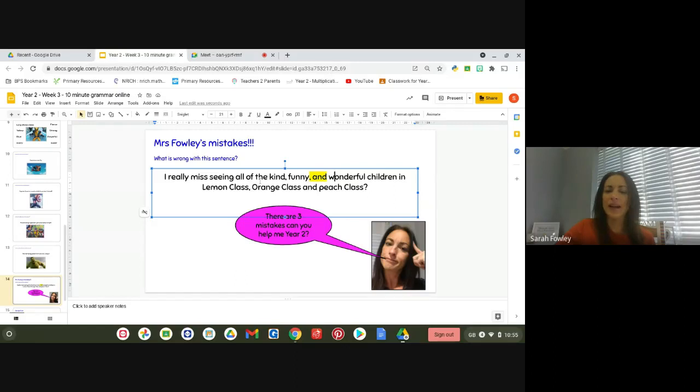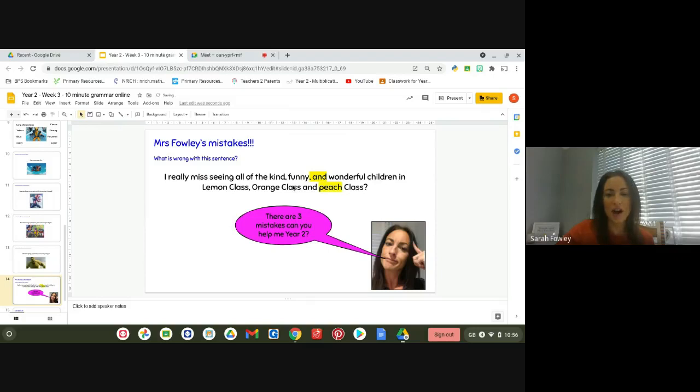So, I really miss seeing all of the kind, funny and wonderful children in lemon class, comma, orange class. Oh, I've remembered here not to put a comma next to my and and peach class. Oh, I can see my mistake. I have not used a capital letter for peach class. My P should be a capital P because it is a proper noun. Okay, so just like I have for orange class and lemon class, I've used a capital letter for the start of the names, whereas peach class I've forgotten. So, I must remember that next time.